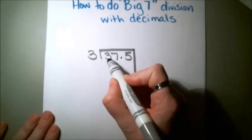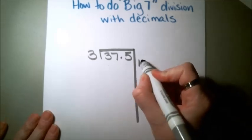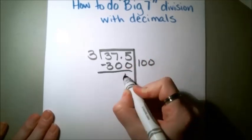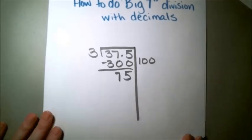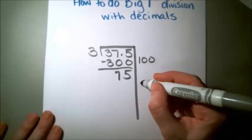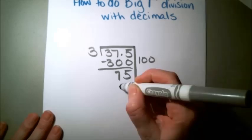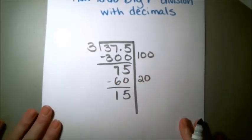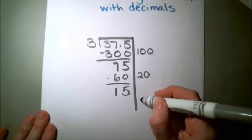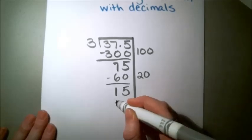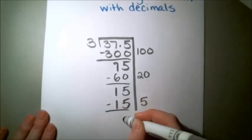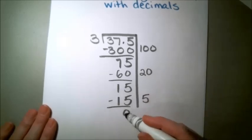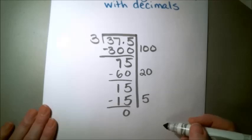So I know that I can take 100 3's out of this number. I'm going to subtract that, and it leaves me with 75. Then I know that I can take out another 20 3's, and that leaves me with 15. And then I can take out another 5 3's to get down to 0. So this problem worked out nice and evenly.